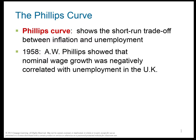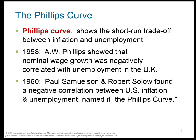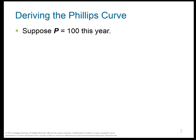In economics, there is a curve called the Phillips curve. It shows the short-run trade-off between inflation and unemployment. Where did it come from? In 1958, a guy named Phillips showed that nominal wage growth and unemployment were negatively correlated. Paul Samuelson and Robert Solow found the same relationship in the United States between overall inflation and unemployment, so they named it the Phillips curve.